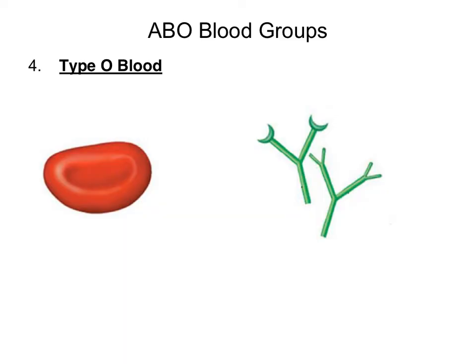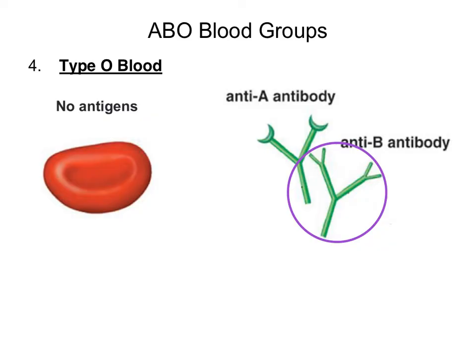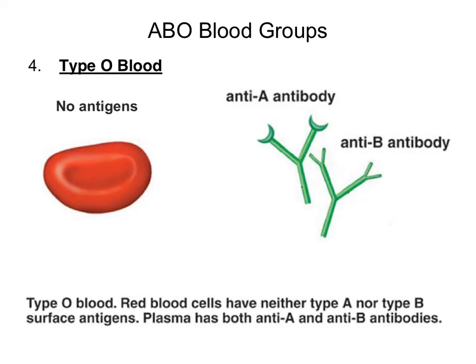And finally, the last blood type is type O blood. A person with type O blood would have red blood cells with no antigens on its surface, while their plasma would contain both anti-A antibodies and anti-B antibodies. In summary, a person with type O blood would have red blood cells that have neither type A nor type B surface antigens, while their plasma would have both anti-A and anti-B antibodies.